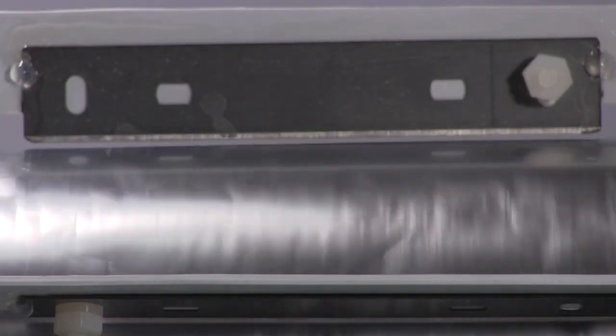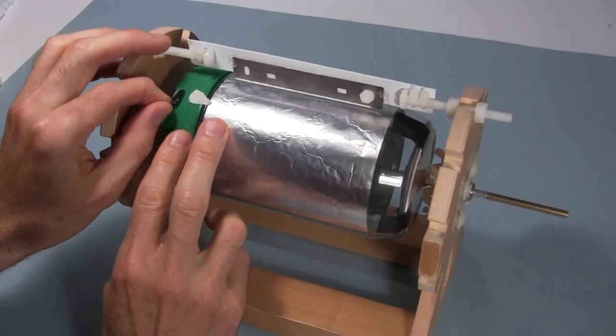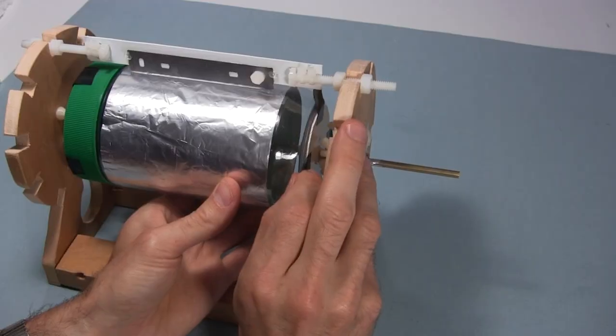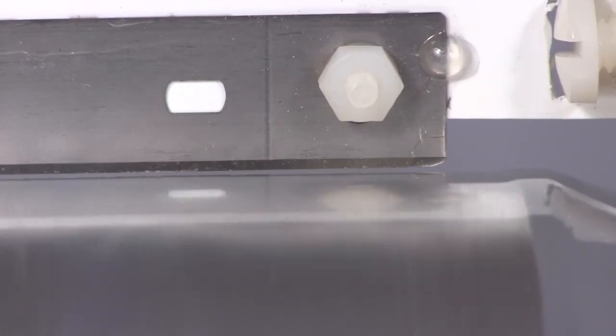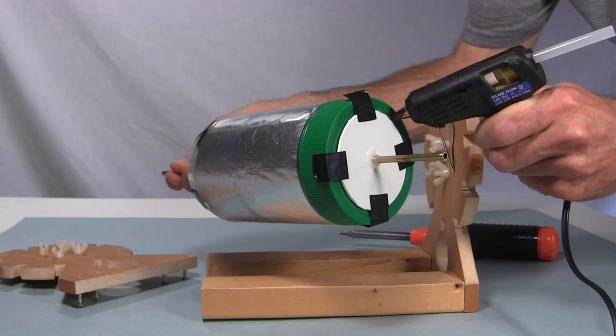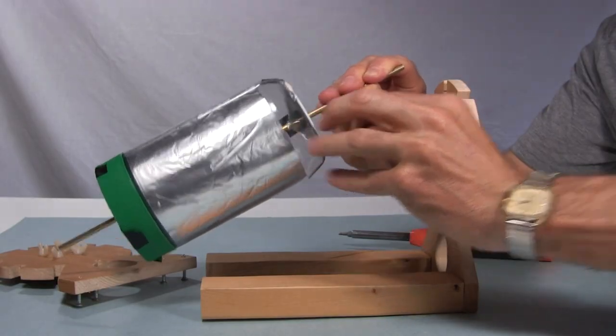So I keep adjusting the cylinder on those discs until the gap stays as even as I can get it for a complete rotation. Much better. Then I hot glue the disc to the cylinder and remove the temporary tape.